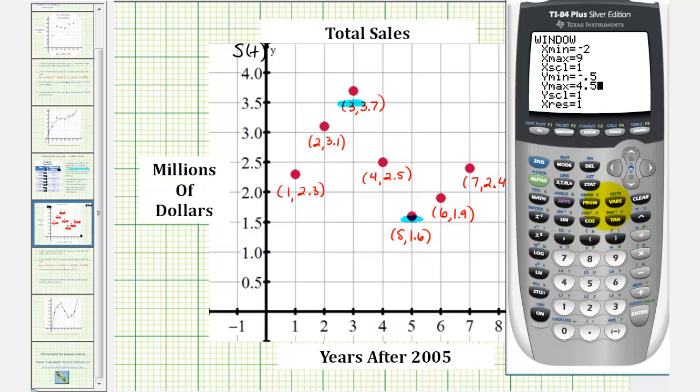And now to turn the stat plot on, let's go ahead and press y equals, press up, highlight y one by pressing enter, and go back down. Notice how it's highlighted. So the scatter plot is now turned on. If we press graph, notice how this does look just like our scatter plot here in red.